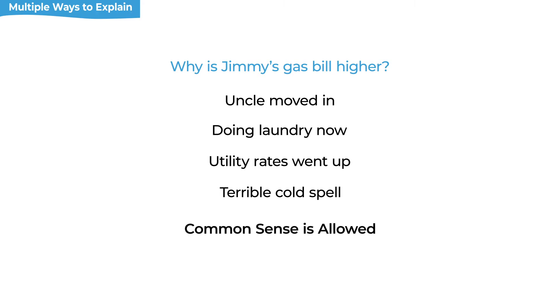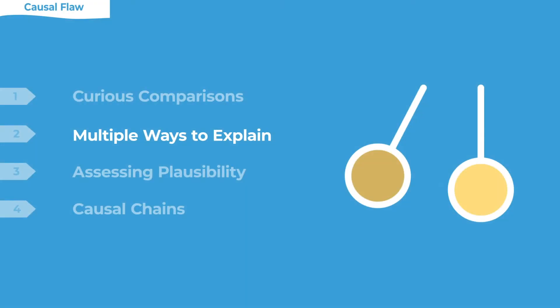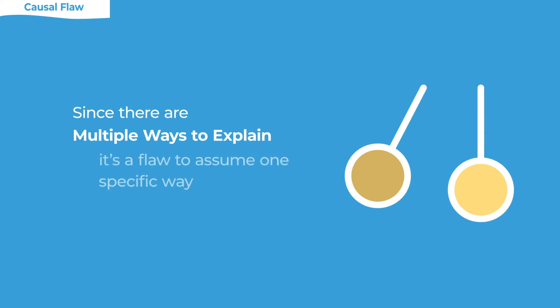The variety of possible storylines is part of the richness of causality. We're totally allowed to use common sense when filling in the blanks for potential explanations. You don't want to invent a crazy story — like if we found out Jimmy just got promoted at his job, there's no common sense connection between getting promoted and using your gas more. Because there are multiple ways to explain a fact, it's a flaw when an author commits to one of them. Whenever we talk about causal flaws, we're really referring to this: the author is overconfident about one specific storyline when there could be other storylines.